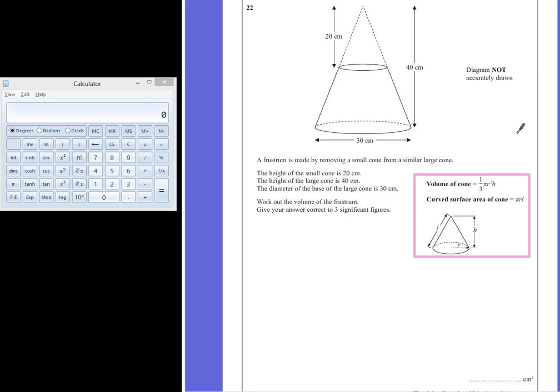We can easily work out the volume of the larger cone by substituting the values into this formula. So we have 1/3 multiplied by π multiplied by the radius squared. Now the diameter we're told is 30, so the radius is 15 squared, and the height of the whole cone is 40.